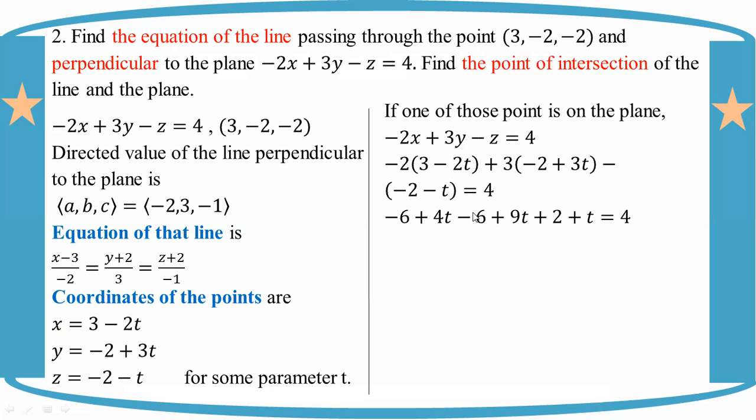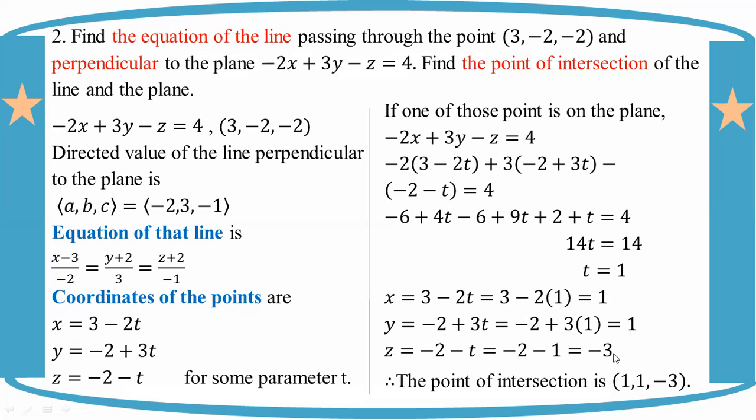This gives 14t = 14, so t = 1. Using t = 1, the point of intersection is x = 1, y = 1, z = -3. The final intersection point is (1, 1, -3).